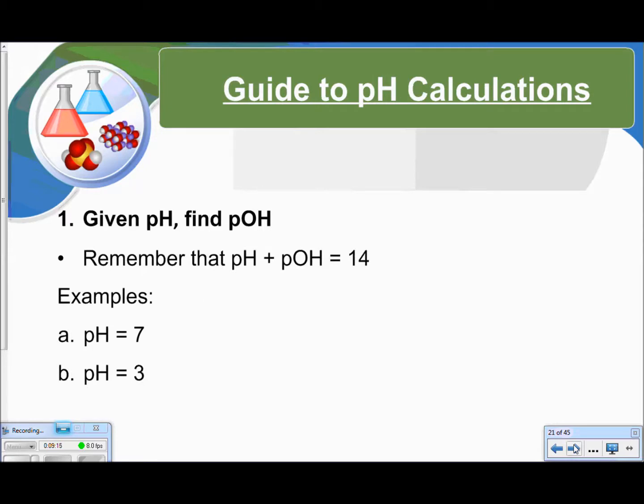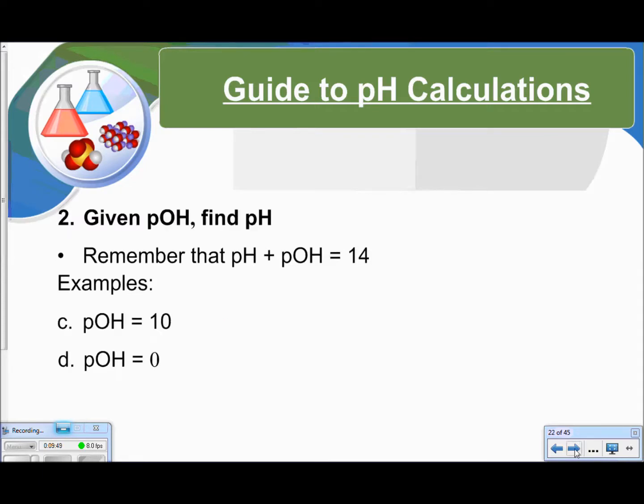If you're given the pH and asked to find the pOH, remember that pH and pOH equal 14. So if your pH is 7, your pOH is also 7, because all you have to do is subtract. If your pH is 3, then 14 minus 3 gives you a pOH of 11. So this one would be neutral, and this one here would be an acid. It's the same if you're going from the opposite angle. If I give you pOH and asked for pH, again, they should add up to 14, so you can just subtract to figure out the opposite. If you're given a pOH of 10, your pH will be 4. If you're given a pOH of 0, then your pH is 14. And in my opinion, it's easier just to memorize one scale. So having memorized the pH scale, I know this is an acid, and this is a base.